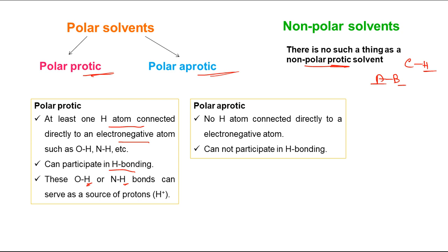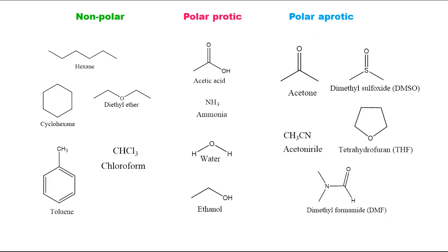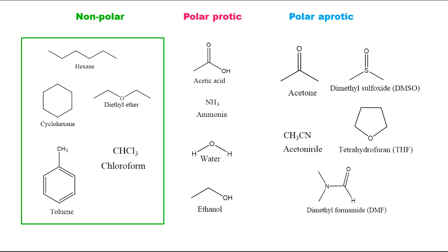Looking at examples with dipole moment and dielectric constant values: several solvents are shown in three categories. For non-polar solvents, checking miscibility with water tells us the category. These five solvents are not miscible with water, so they are non-polar. For polar protic versus polar aprotic, we check whether any hydrogen is directly attached to O or N — if so, it is polar protic. The remaining miscible solvents fall under polar aprotic.